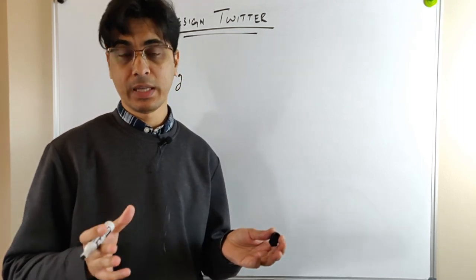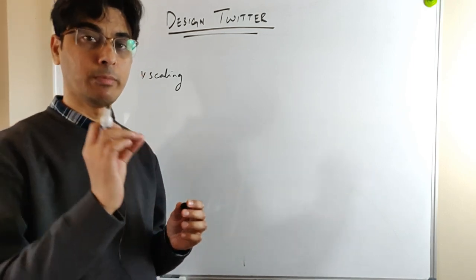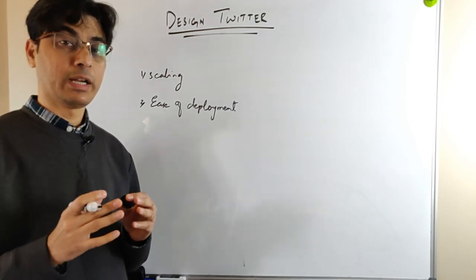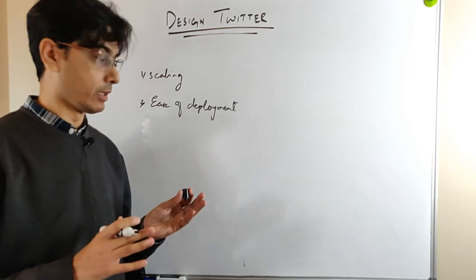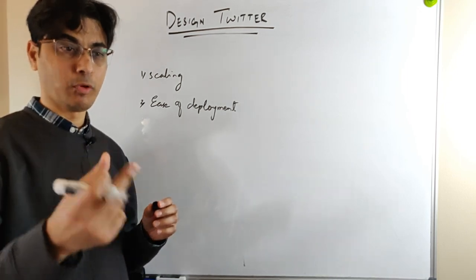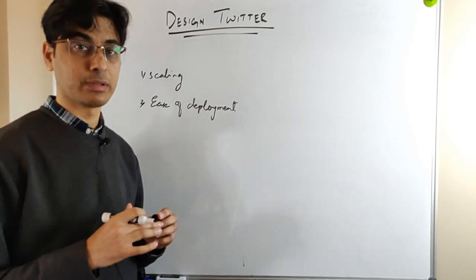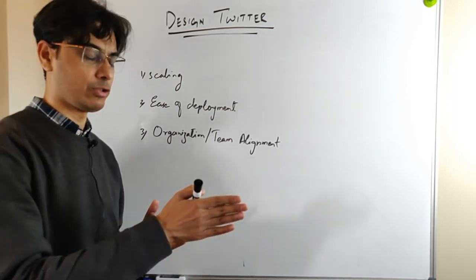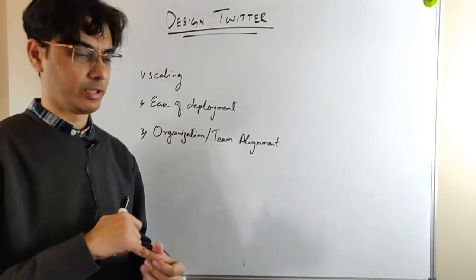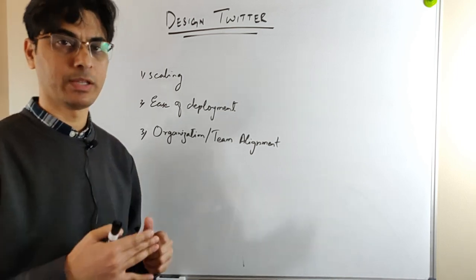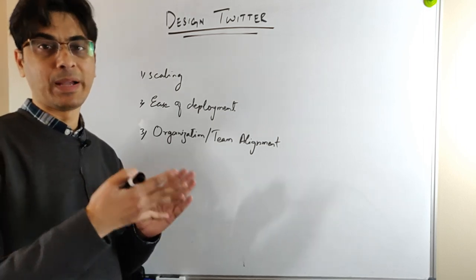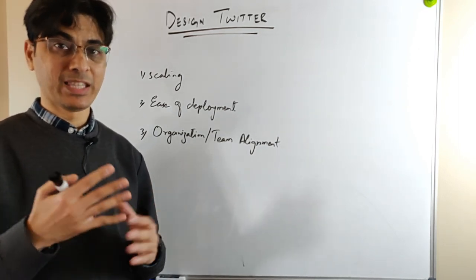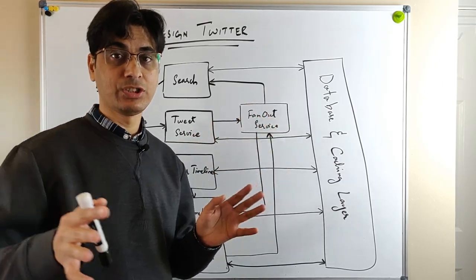The second advantage of microservices is ease of deployment — it is very easy to deploy individual microservices without affecting each other, whereas in a monolithic service even a small change requires deploying the whole giant service. The third advantage is team alignment — in a microservice architecture each team owns an individual microservice and is responsible for its features, scaling, deployment, and ops issues.